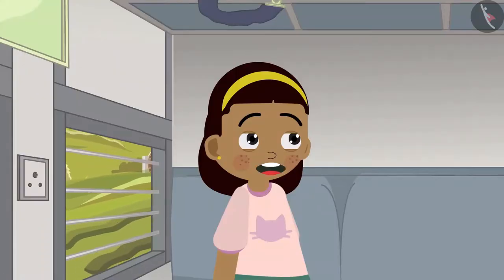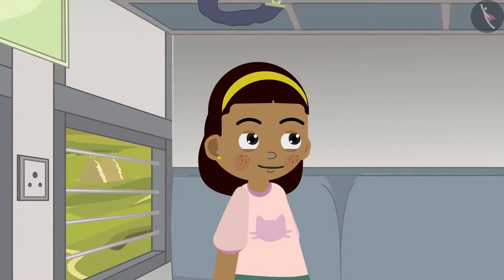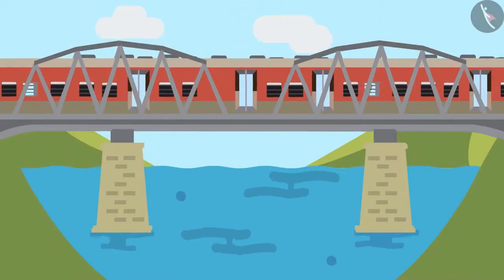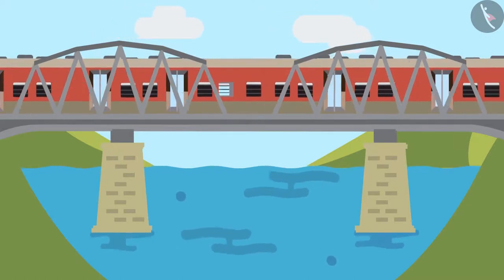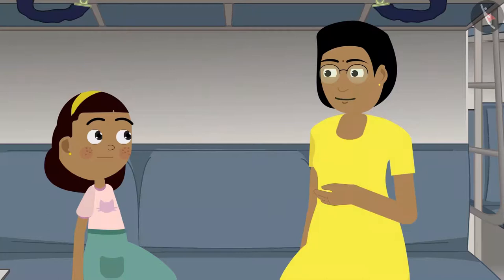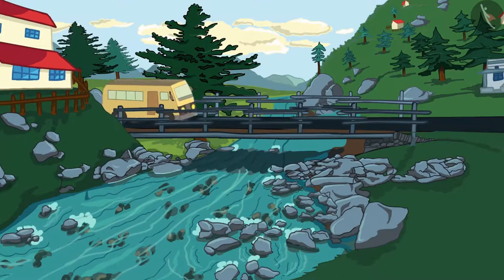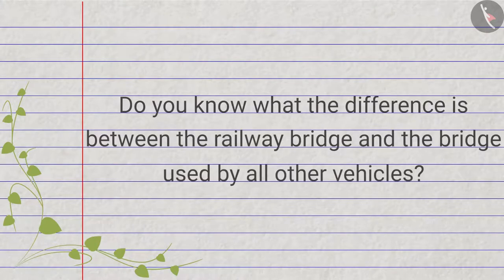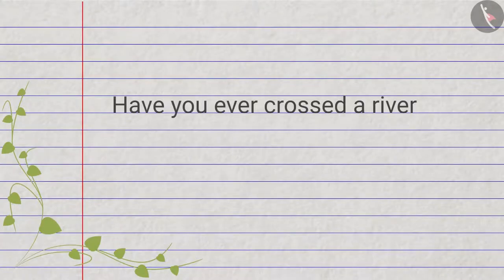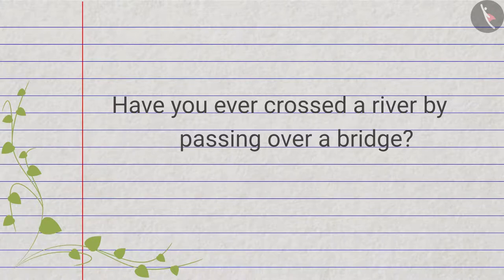Zia asks, 'What is this train running on? There is only water below us!' Her mother explains the train is passing over a river on a bridge. Zia asks if other vehicles also use this kind of bridge. Her mother explains there is a different kind of bridge for other vehicles — the railway bridge has tracks, while bridges for other vehicles have paved roads. Have you ever crossed a river over a bridge? Can you think of other ways to cross a river?